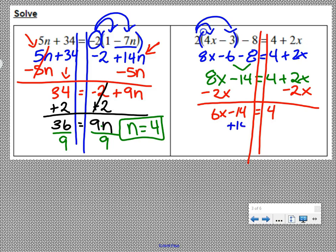Undo subtraction with addition. Add 14 to both sides. We have 6x equals 18. Undo multiplication with division. Divide both sides by 6, and you should get x equals 3.